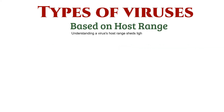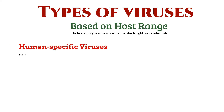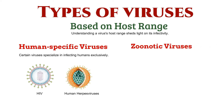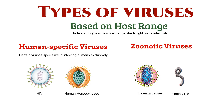Understanding a virus's host range sheds light on its infectivity. Certain viruses, like HIV and human herpes viruses, specialize in infecting humans exclusively. Conversely, zoonotic viruses, such as influenza viruses and Ebola virus, can move between animals and humans.